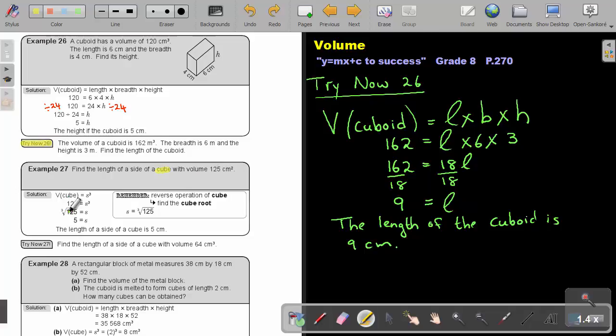Remember, the volume of a cube is S to the power of 3. But can you remember from the previous chapters, what is the reverse of cube? It is cube root. So to get S alone, I will just take the cube root. That will give me a value of 5. So the length of a side of a cube is 5.